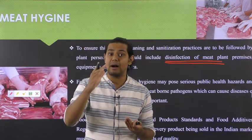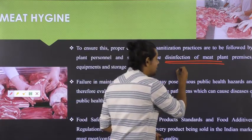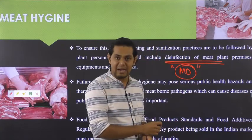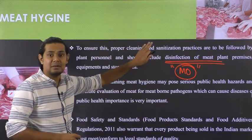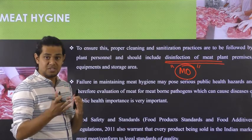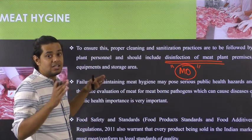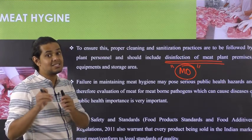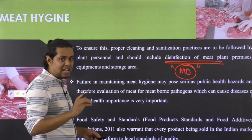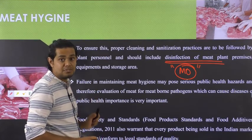Biological hazards — primarily microorganisms — are the main concern in meat hygiene. By regularly cleaning the meat premises and equipment used for processing, and by properly sanitizing and disinfecting them, we ensure that contamination from this equipment is minimized, making hygiene a critical criterion throughout the entire meat processing operation.